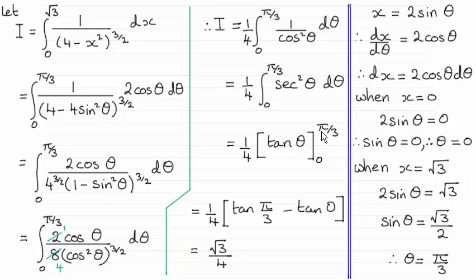So substitute your limits in, pi upon 3 and 0. Do the subtraction. Tan of 0 is 0. The tan of pi upon 3 is exactly root 3. So times it with the quarter and you've got root 3 over 4.